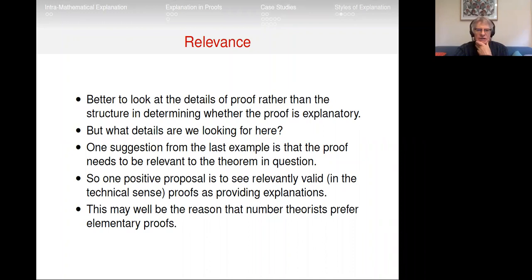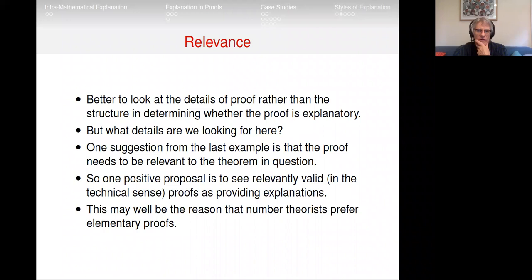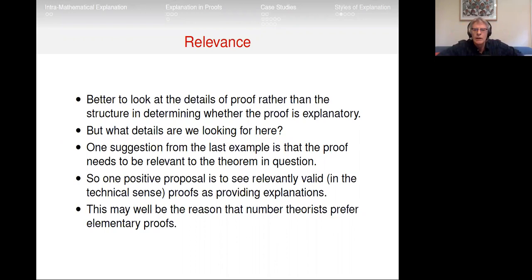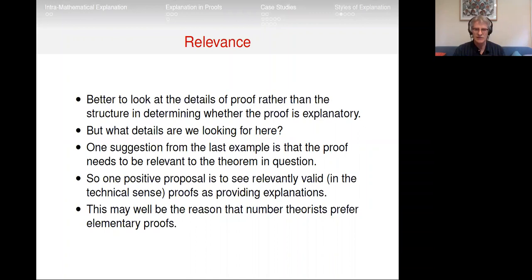There's a sort of structural, holistic notion and something much more local, intrinsic, relevant kind of notion. Going back to Fermat's Little Theorem: the number theory proof is local — it's about proving a number theory result using only the resources immediately in front of you, stuff about numbers, relevant in the colloquial sense. I am tempted by the thought of relevance logic shedding some light on this. Numbers are relevant to results about numbers, whereas it's not obvious that categories or groups are relevant in that same sense to results about numbers.